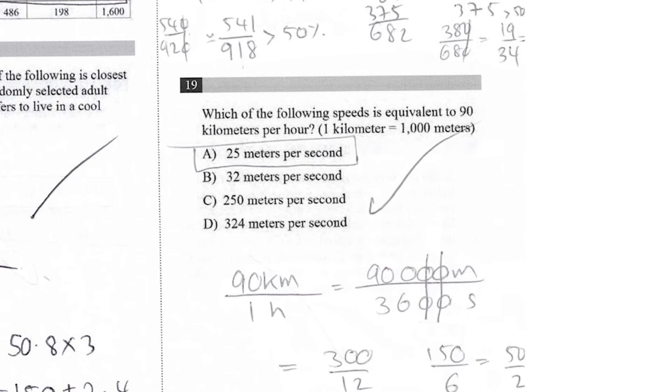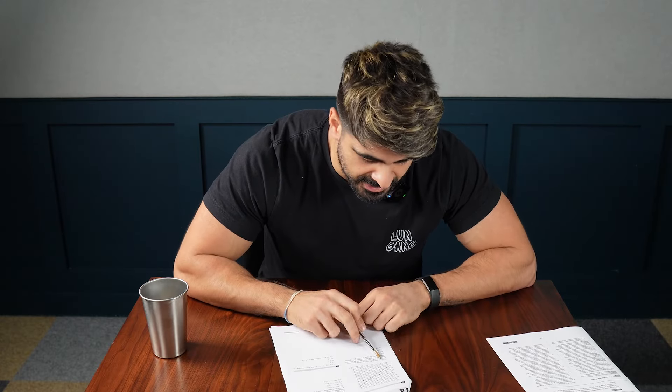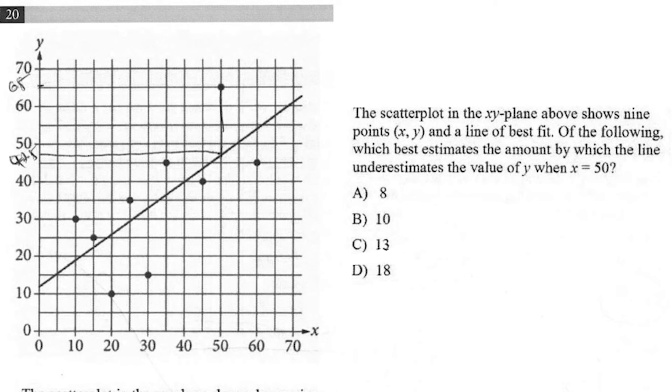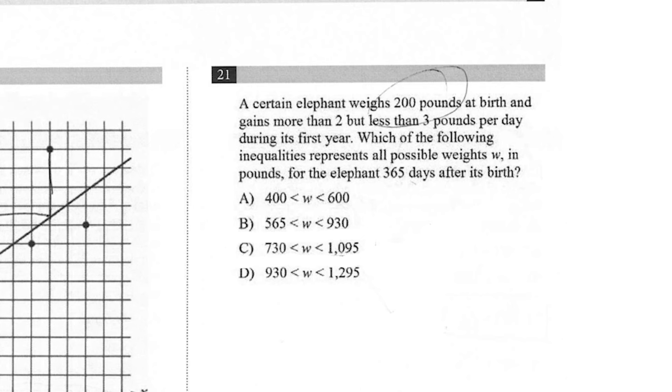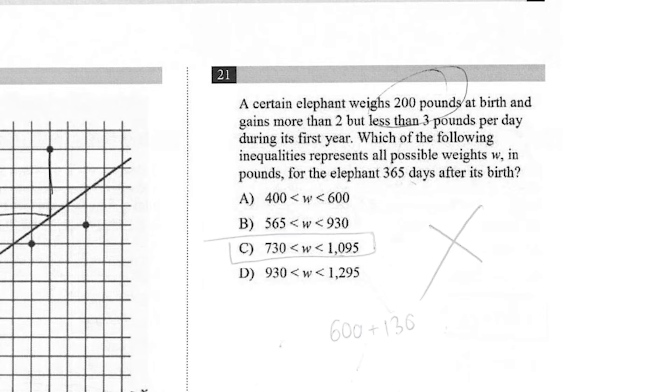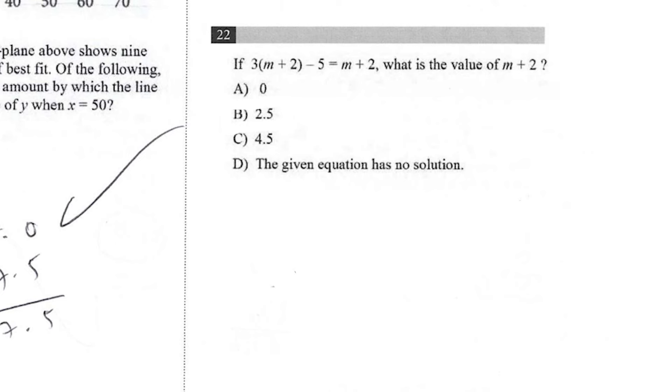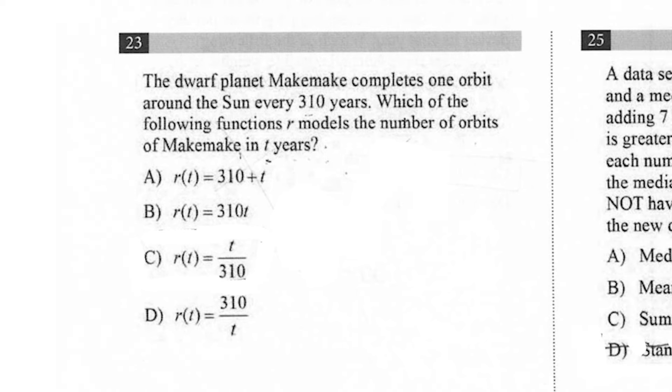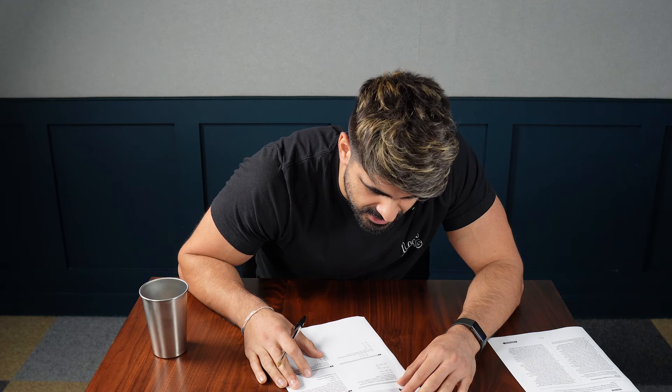Which of the following speeds is equivalent to 90 kilometers per hour? I just did a reel like this. So 25 meters per second. Which best estimates the amount by which the line underestimates the value of Y when X is 50, which is about 18. A certain elephant weighs 200 pounds at birth and gains more than two, but less than three pounds per day. It's so annoying. 730. That's the only option. If this is true, what is the value of M plus two? So 2.5. Makemake completes one orbit around the sun every 310 years. Which of the following functions R models the number of orbits of Makemake in t years? T over 310.